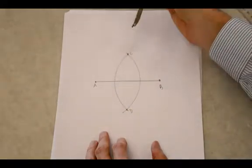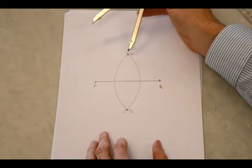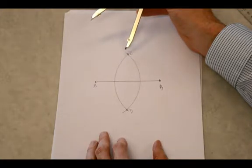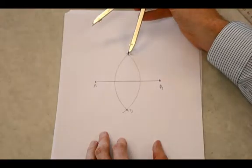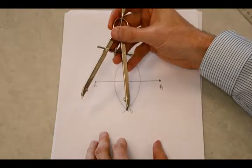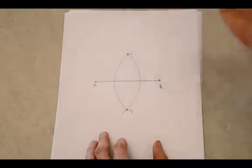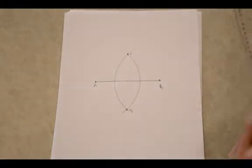Now the thing is, if you have a point that is not on a line segment and it is equidistant to the end points, meaning the same distance, it has to be on the perpendicular bisector. So point C has to be on the perpendicular bisector, so does point D. And since two points determine a line, we can draw that line.